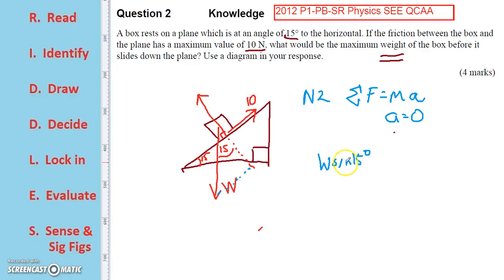W sine 15 degrees has got to be equal to 10 newton, that's the frictional force. Now as the weight force increases, then it will start to slide. But as it's about to slide, these two forces are the same.